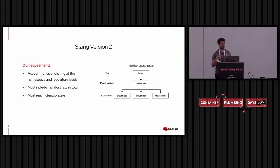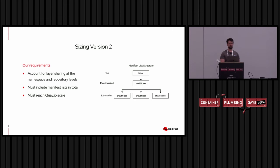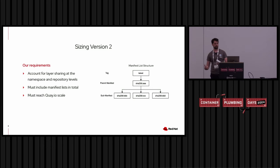So what we're trying to accomplish in sizing version 2: we want to account for layer sharing at the namespace and repository levels, include manifest lists in the totals, and most importantly, scale this to Quay.io.